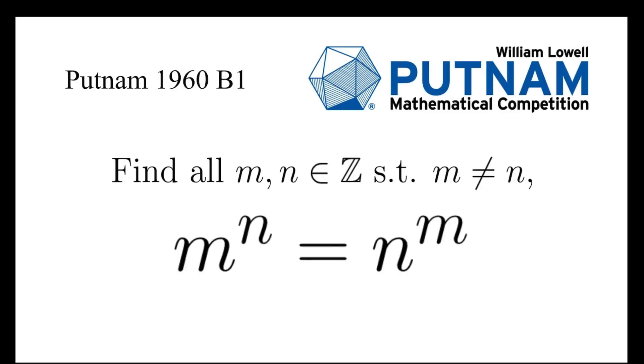In this video, we are going to find all pairs of unequal integers m and n such that m to the power of n equals n to the power of m. This is a problem from Putnam 1960.